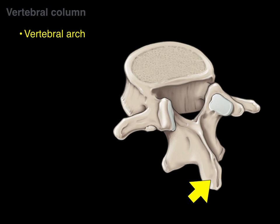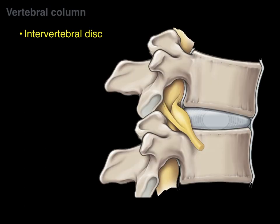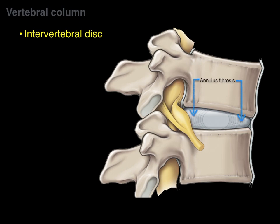The vertebral arch starts at the spinous process and connects the spinous and transverse processes — that whole part of a vertebra is called the vertebral arch. An intervertebral disc is located between adjacent vertebrae and is made of fibrocartilage. The annulus fibrosus is the fibrocartilage on the periphery, and the nucleus pulposus is the more gelatinous substance inside — like a jelly donut, with the pastry as the annulus fibrosus and the jelly as the nucleus pulposus.